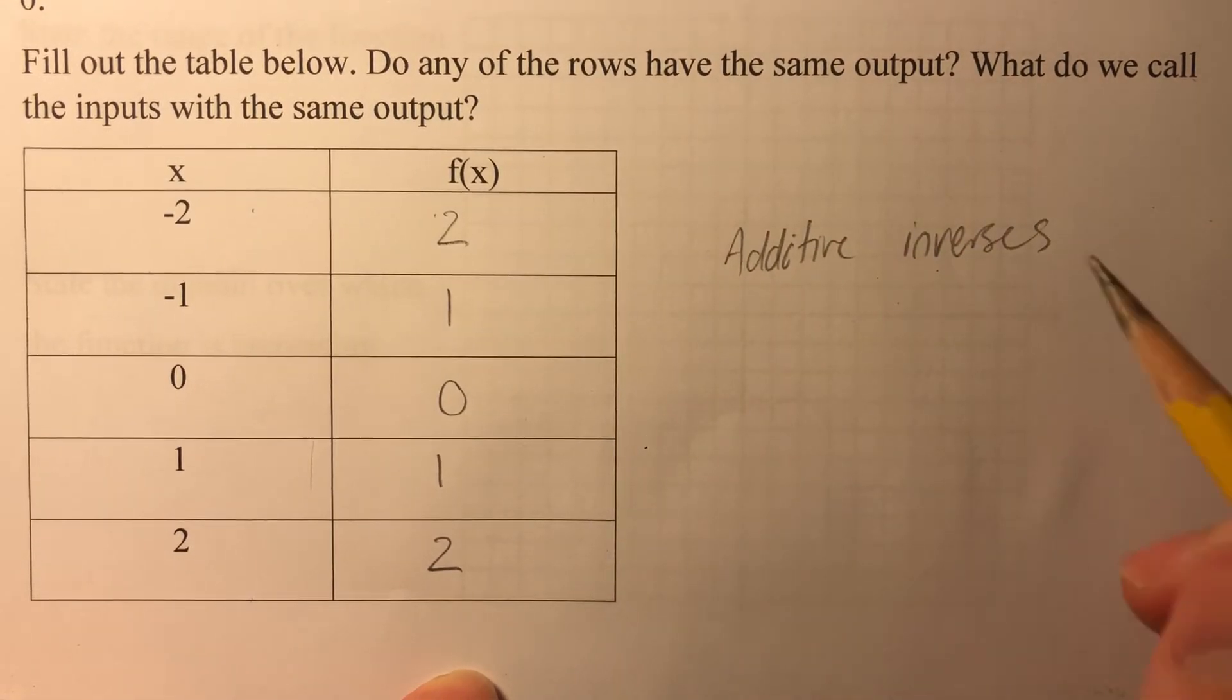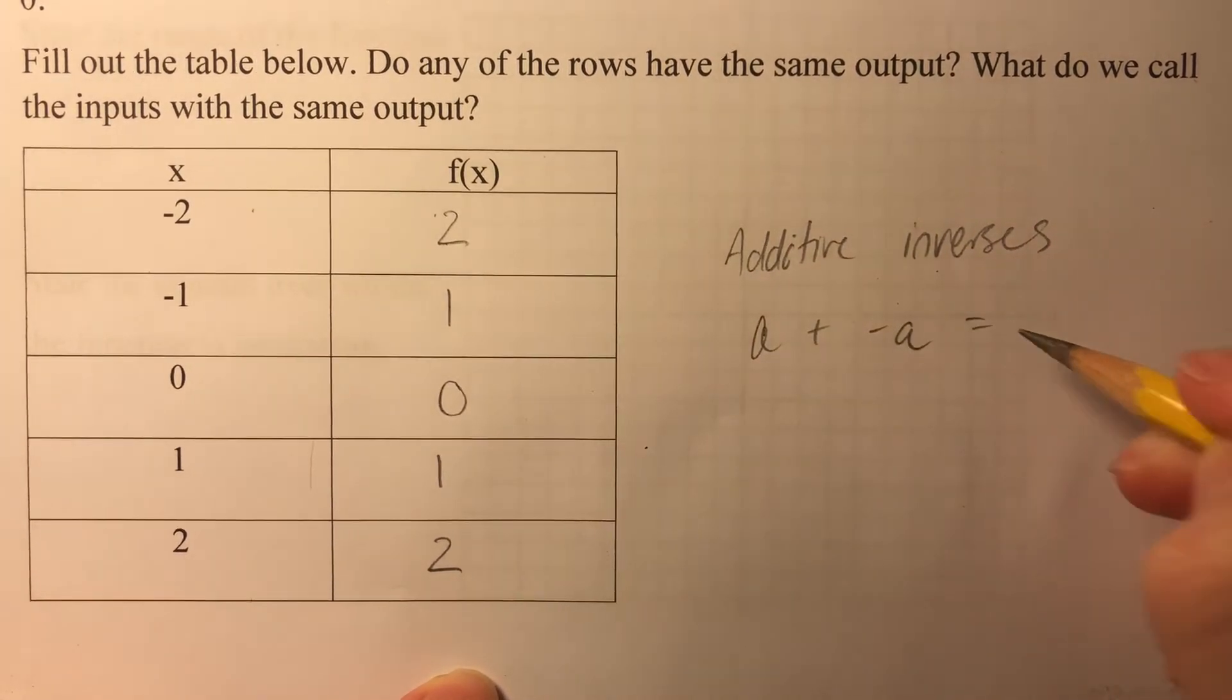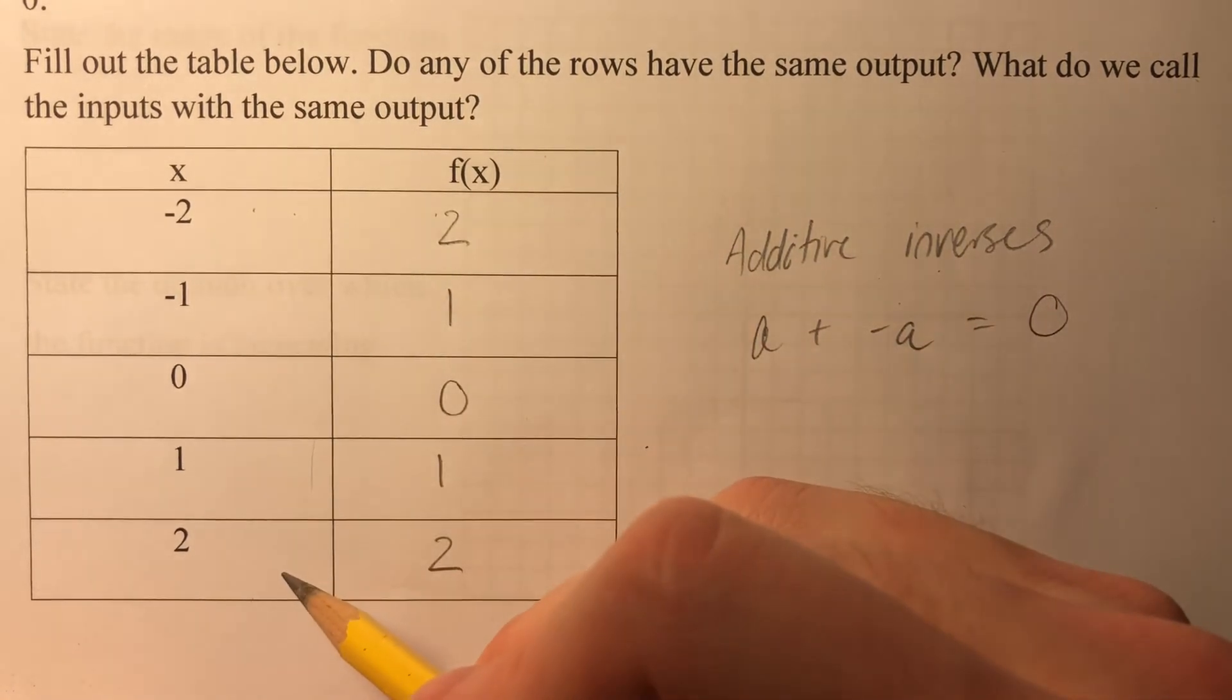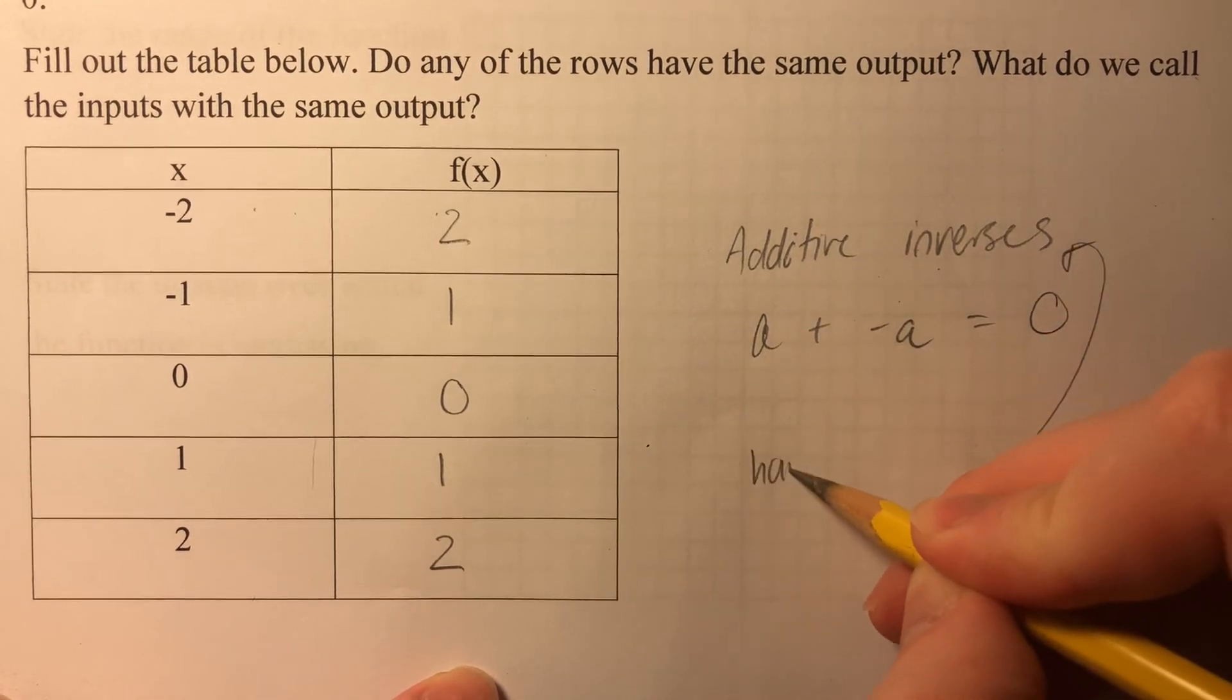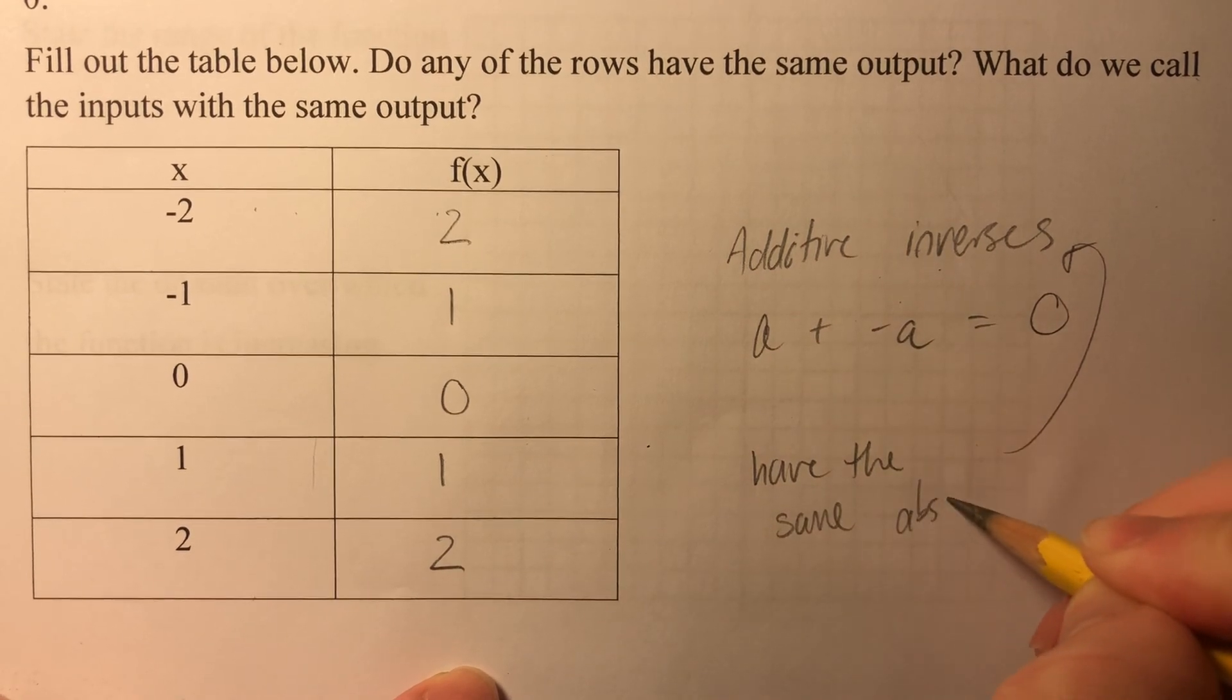Additive inverses are just numbers like a plus negative a. When I add them together I get 0. Negative 2 plus 2 is 0. Negative 1 plus 1 is 0. All right, so additive inverses will have the same absolute value.